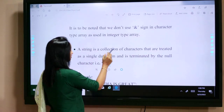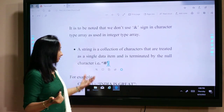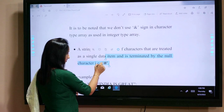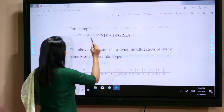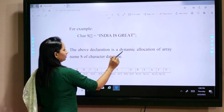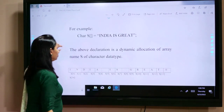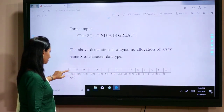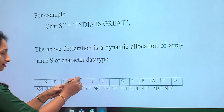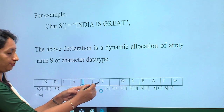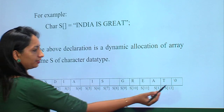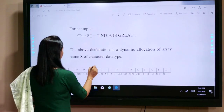A string is a collection of characters — more than one character — treated as a single data item. At the end of the string, a null character '\0' must be used. For example: char s[] = "India is great". Here 'I' is stored at s[0], then s[1], s[2], and so on. There is a blank at s[5] because there is another word. The last position, s[14], should contain the null character. This is the declaration for a character type array.